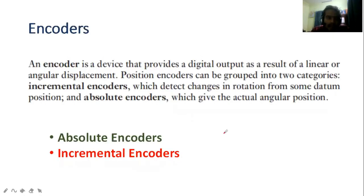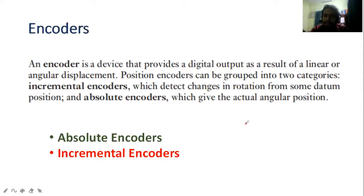Now let's talk about encoders. An encoder is a device that provides a digital output as a result of linear or angular displacement.